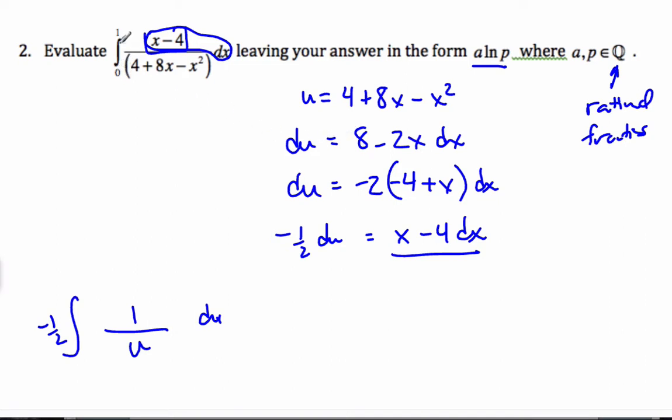Now this does not look like this exactly. It's almost the same, but if I pull out a factor of negative 2, then I have negative 4 plus x dx, which is indeed du. So if I divide by negative 1 half, negative 1 half du is x minus 4 dx. So this I can substitute in here.